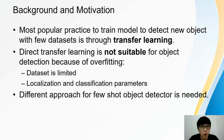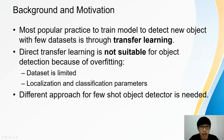Currently, the most popular practice to train a model to detect new objects with few datasets is through transfer learning. However, direct transfer learning is not suitable for object detection, because an overfitting problem might occur especially when the datasets are limited, as the object detector is required to learn the optimal parameters for both localization and classification. Therefore, the motivation of this project is to study and enhance an approach for a few-shot object detector for video surveillance.